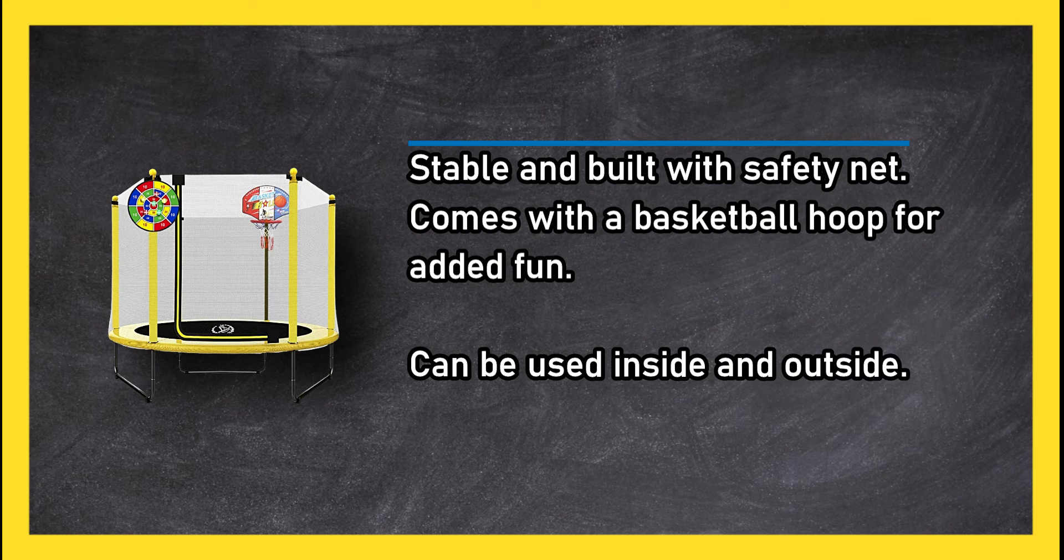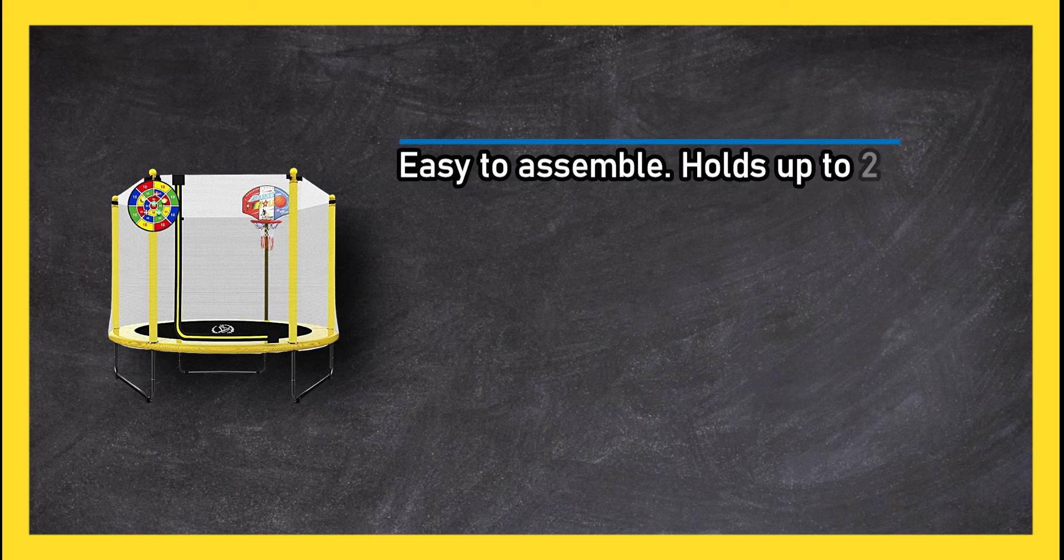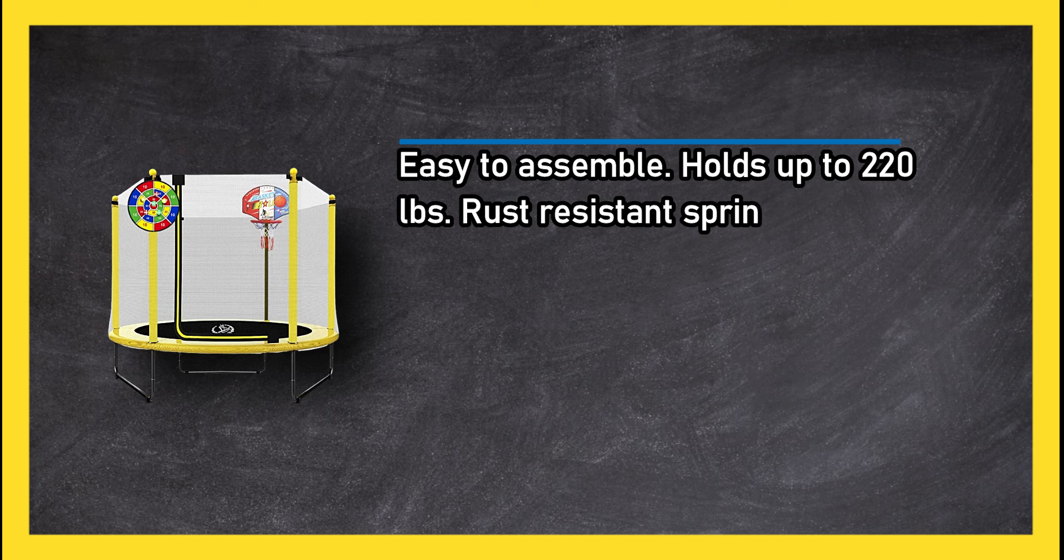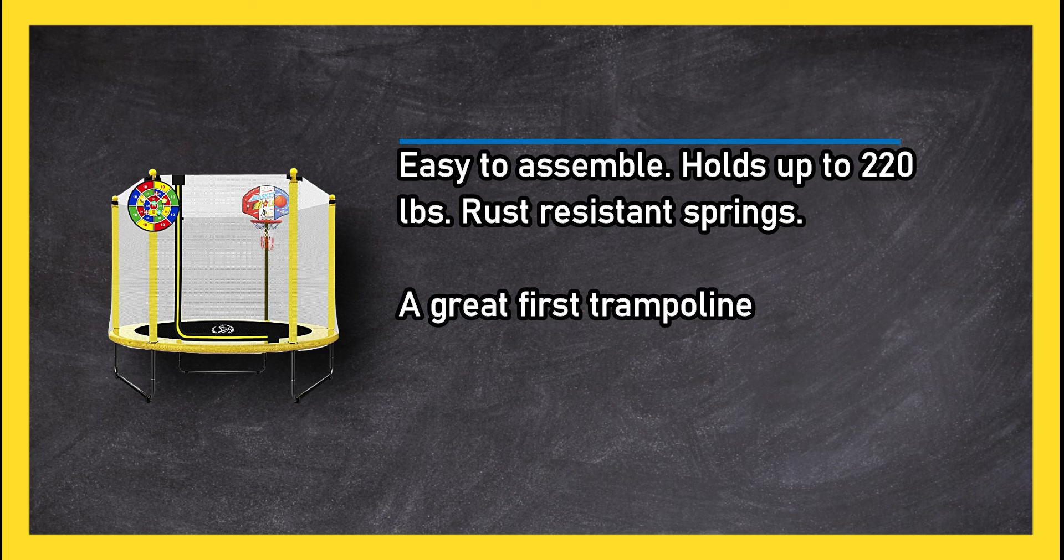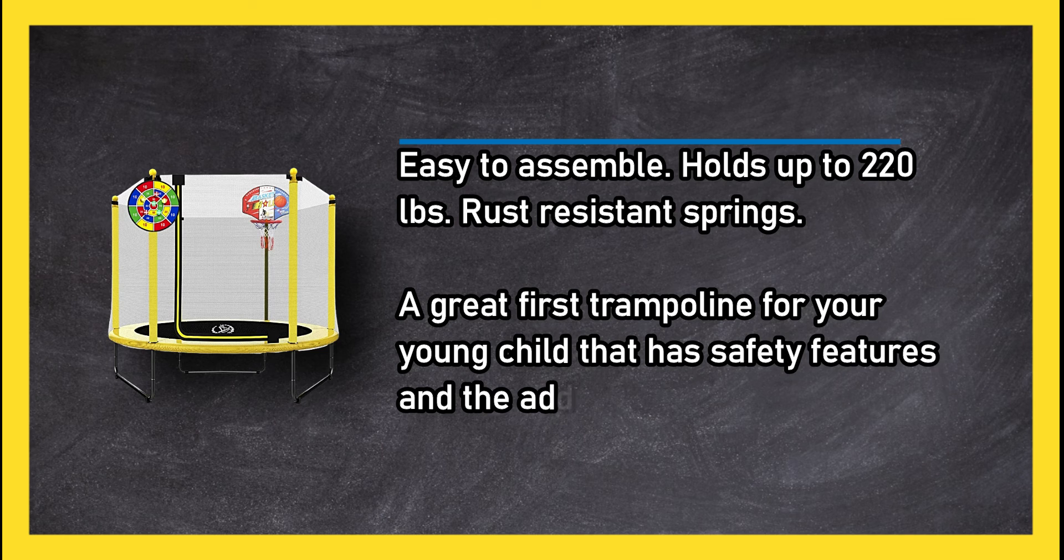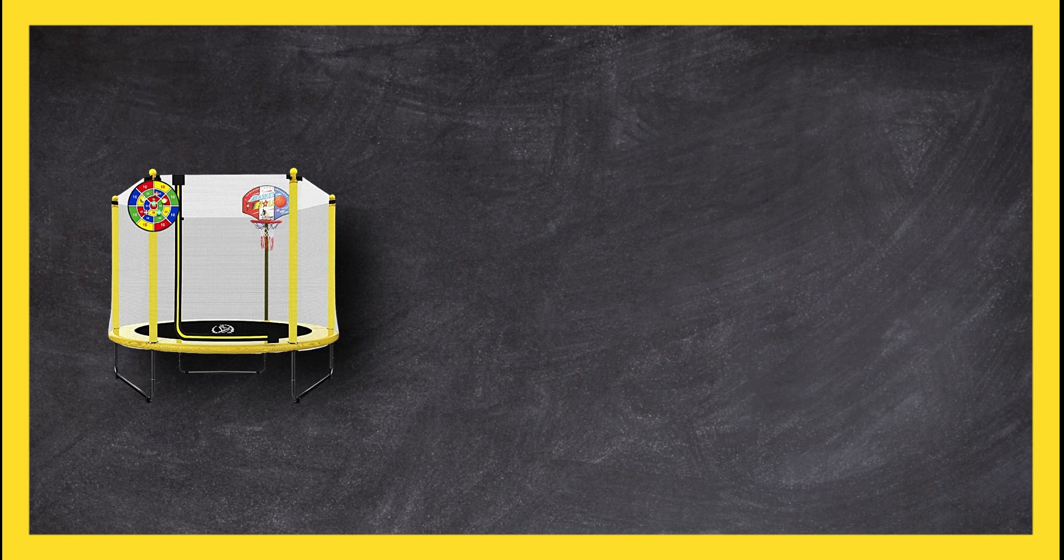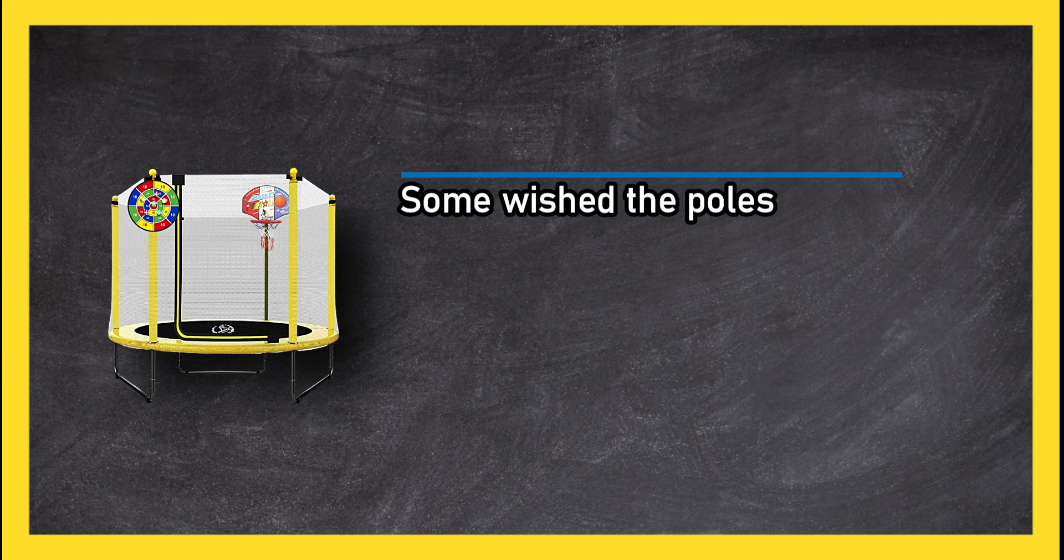Rust resistant springs. A great first trampoline for your young child that has safety features and the added fun of a basketball hoop. Some wished the poles that held up the safety net were sturdier.